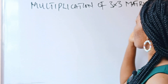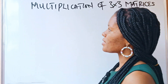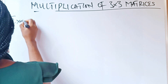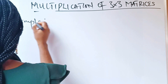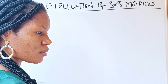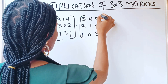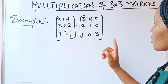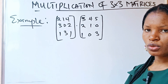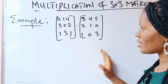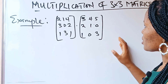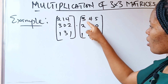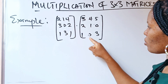Let's discuss the multiplication of 3x3 matrices. For example, we are asked to multiply this by this. For a 3x3 matrix, all you need to do is multiply each row by column — row by column.